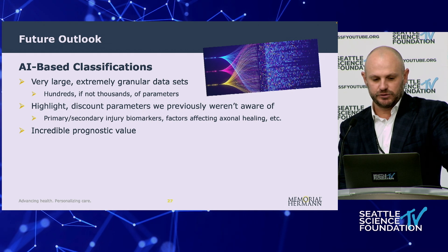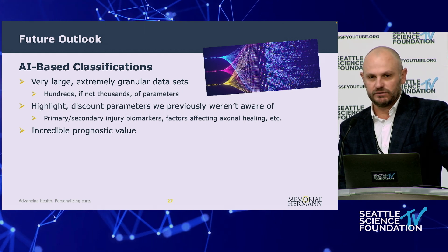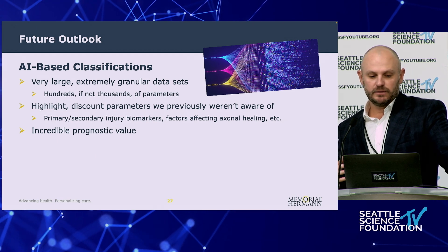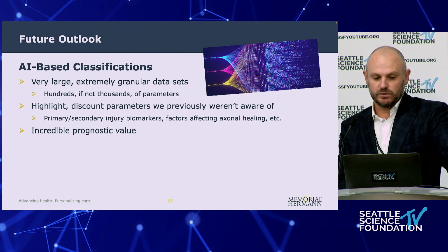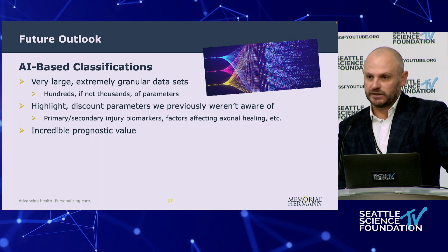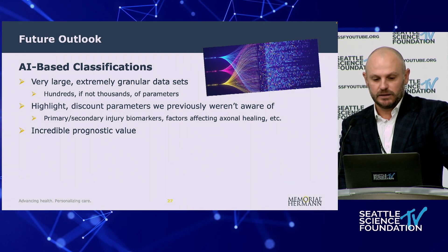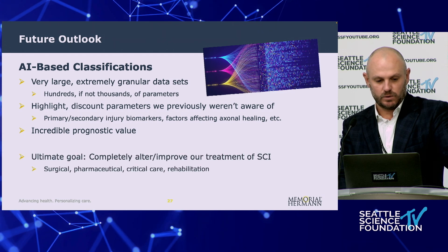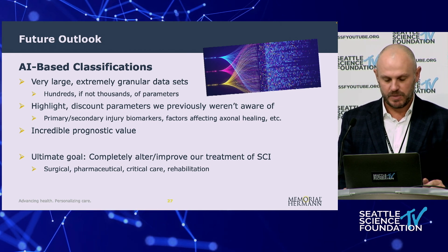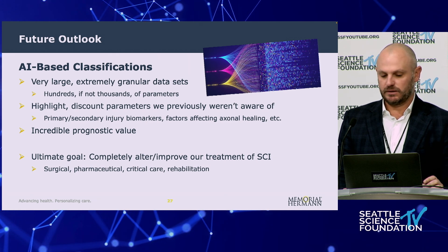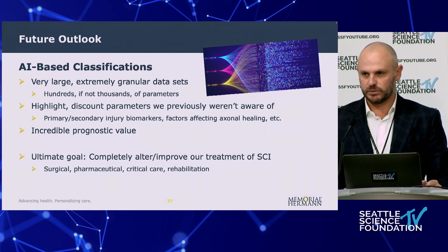These are very powerful, very capable computer systems that are going to be able to analyze a sheer volume and parameter of data that we physically aren't going to be able to do ourselves. These systems will provide quantitative analytical tools used for machine learning that's going to enhance our research primarily in the laboratory and clinical research setting. These will be very large, extremely granular data sets — hundreds if not thousands of parameters — applied toward our spinal cord injury patients. Things like level of injury, degree of stenosis, spinal cord edema on imaging. Dr. Hofstetter mentioned primary and secondary injury biomarkers, factors that affect axonal healing. I think a lot of these things will come to light with the supercomputers coming our way, making this an incredible prognostic tool — with the ultimate goal of completely altering and improving our treatment of spinal cord injury, from a surgical, pharmaceutical, critical care, and rehabilitation perspective.